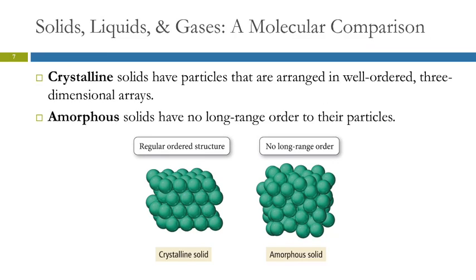How the particles in a solid are arranged falls into two broad categories, crystalline solids and amorphous. Crystalline solids have regular ordered structures. There's a pattern here. Everything's nice and ordered in three dimensions. Amorphous means without shape. Here the particles are just all jumbled together.